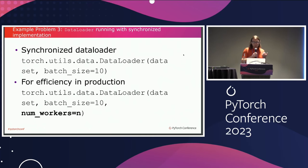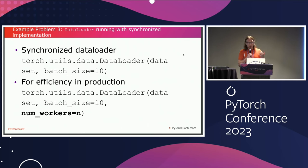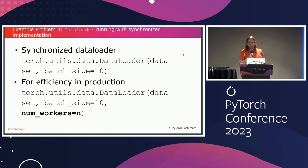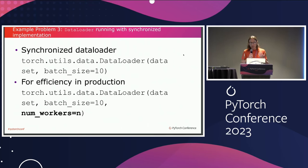Another problem is about DataLoader. If you don't provide the num_workers parameter, the default is zero. That means data loading happens in the same process as computation, synchronously, so data loading can potentially block computation. For efficiency reasons in production, you want to set num_workers to something greater than zero — the exact number depends on how many CPUs you have. This issue is not necessarily an error; depending on your goals, the default of zero may be perfectly valid. But we still want to flag this so the user can inspect and understand if it's an actual issue for them.